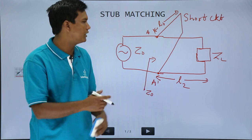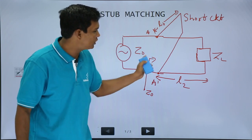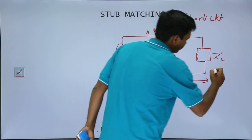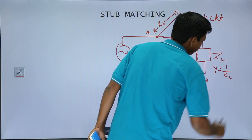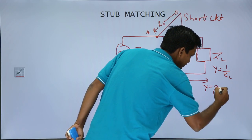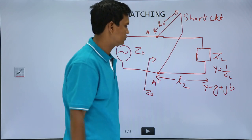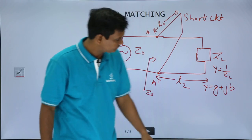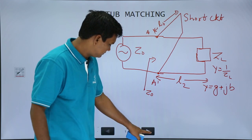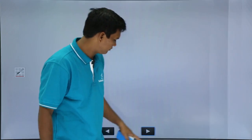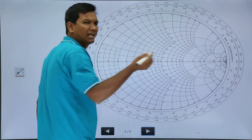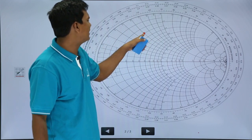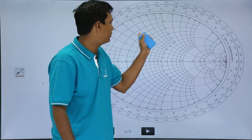How can we achieve this? Since the stub and the line section are in parallel, we deal with admittance because admittances in parallel add up. So let Y = 1/Z_L — this is the admittance — and Y = g + jb. We will deal in terms of admittance: g + jb is our admittance. On the Smith chart, g + jb will be some point; let me mark that point somewhere on the chart — it will have a real part and a complex part.